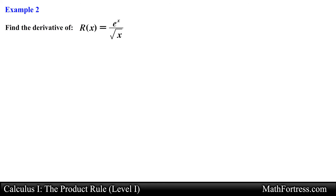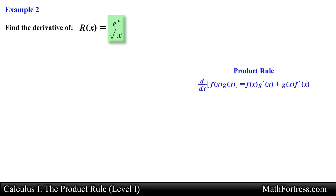Alright let's try the next example. Find the derivative of r of x equals e to the x over the square root of x. Notice that in this example we have a quotient of two functions. At first glance it seems that we cannot use the product rule, but it turns out we can. All we need to do is rewrite the expression into a product rule friendly form by rewriting the radical in the denominator as x raised to the power of negative one half.